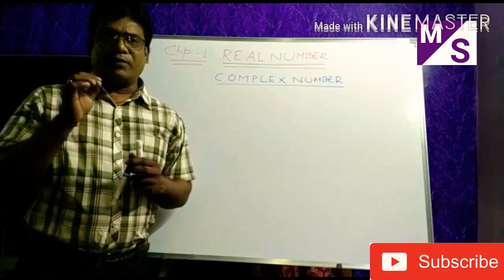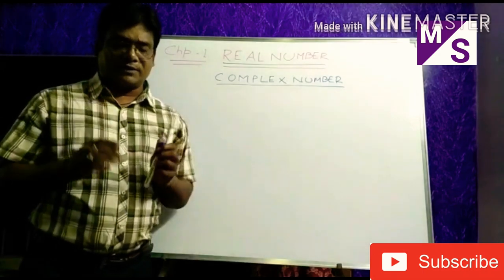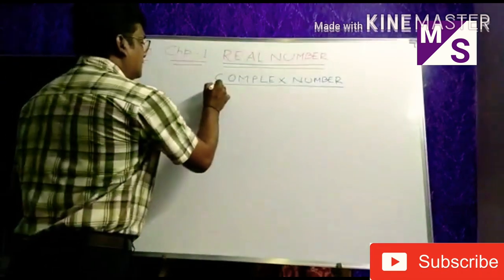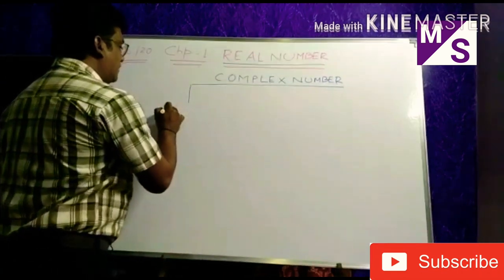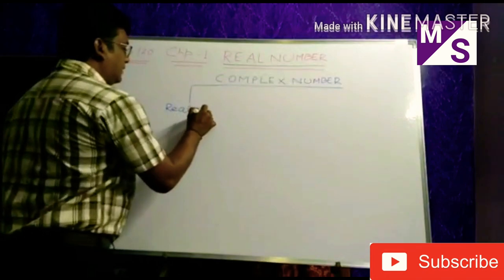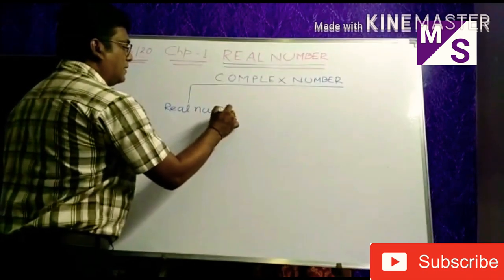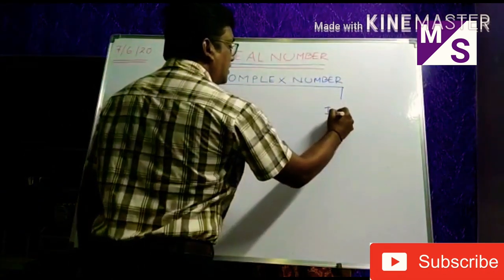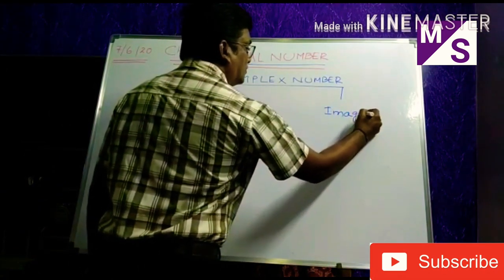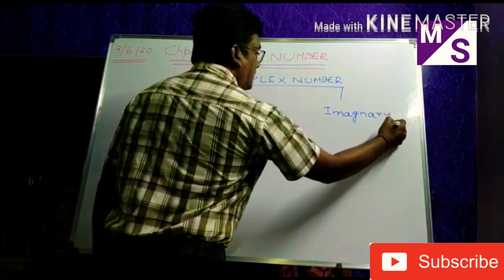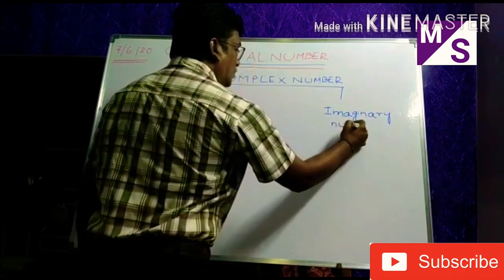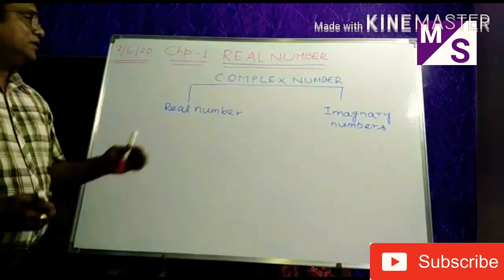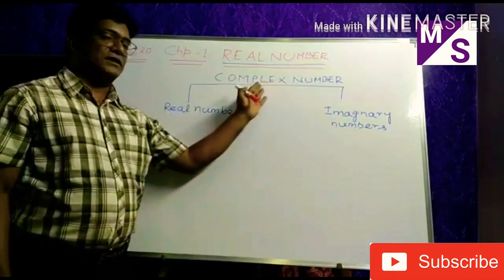We can broadly divide the complex number system into two parts. One is called real number, and the other is called imaginary number — the numbers which we can imagine. I am coming to explain you about these two divisions of complex numbers.